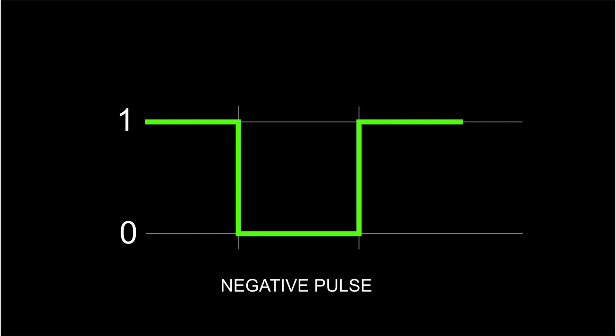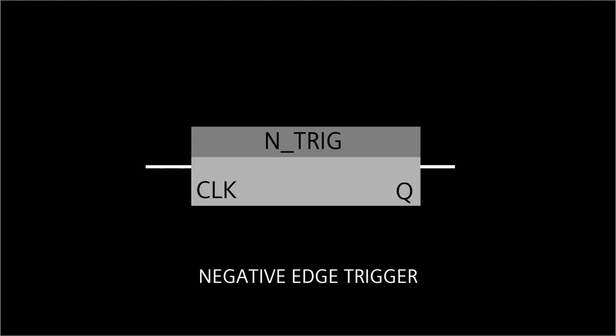A negative edge trigger detects the falling edge signal and a change in address from 1 to 0. So let's use this ENT trigger function.